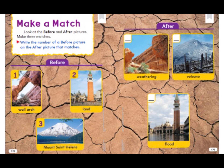Look at the before and after pictures. Make three matches — write the number of a before picture on the after picture that it matches. We have a wall arch, land, and Mount St. Helens. The wall arch matches the picture that shows weathering, so I'm going to write number one in that box. It looks like a volcano hit Mount St. Helens, so I'm going to write number three next to the picture of a volcano, and number two next to the picture of the flood.